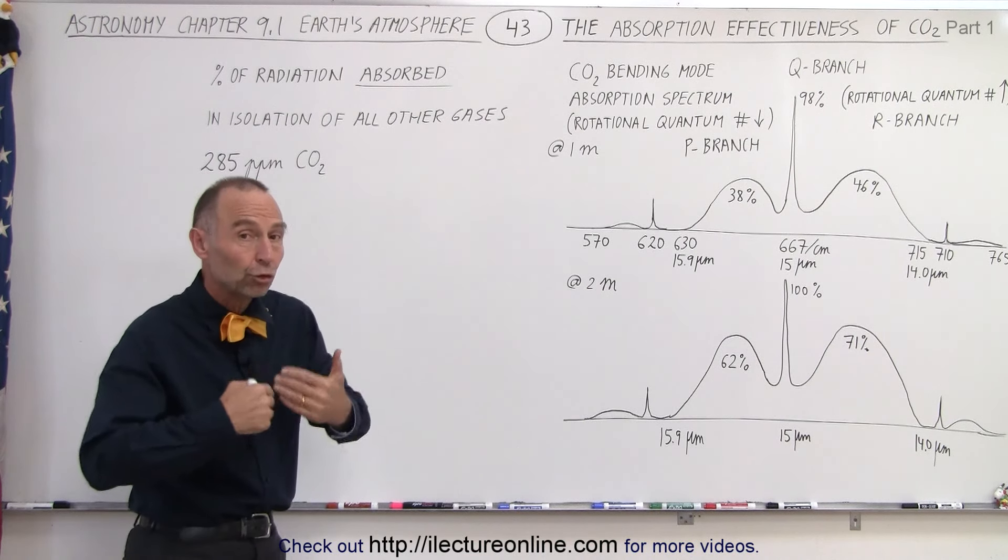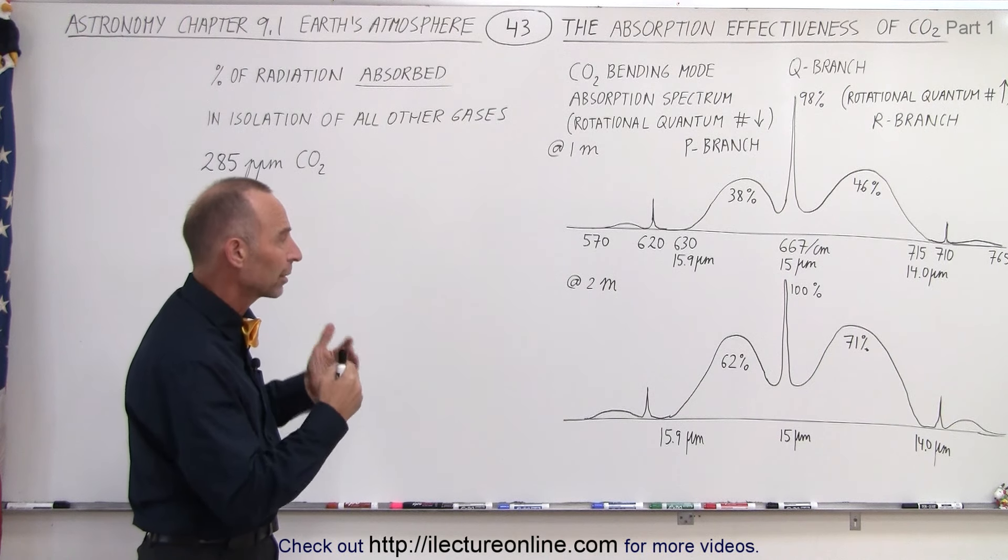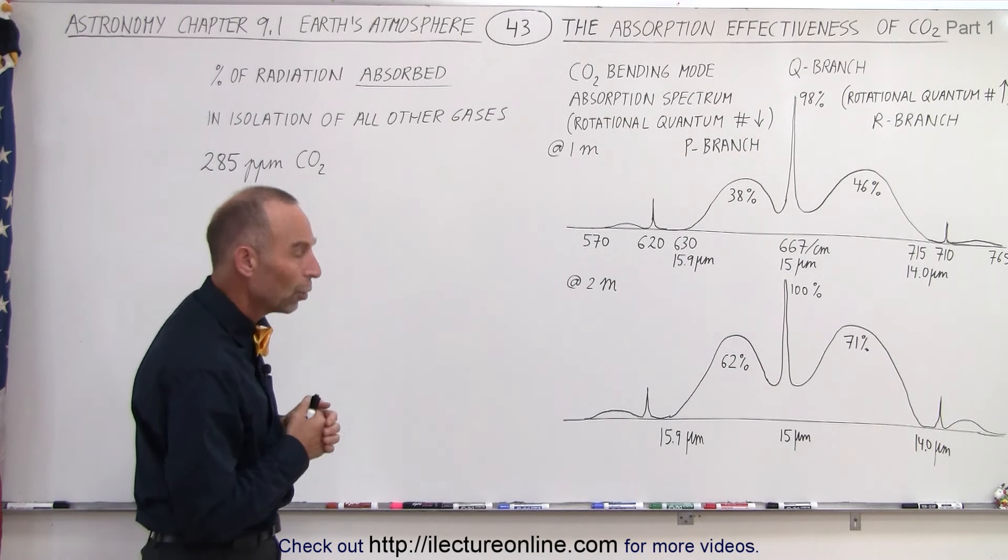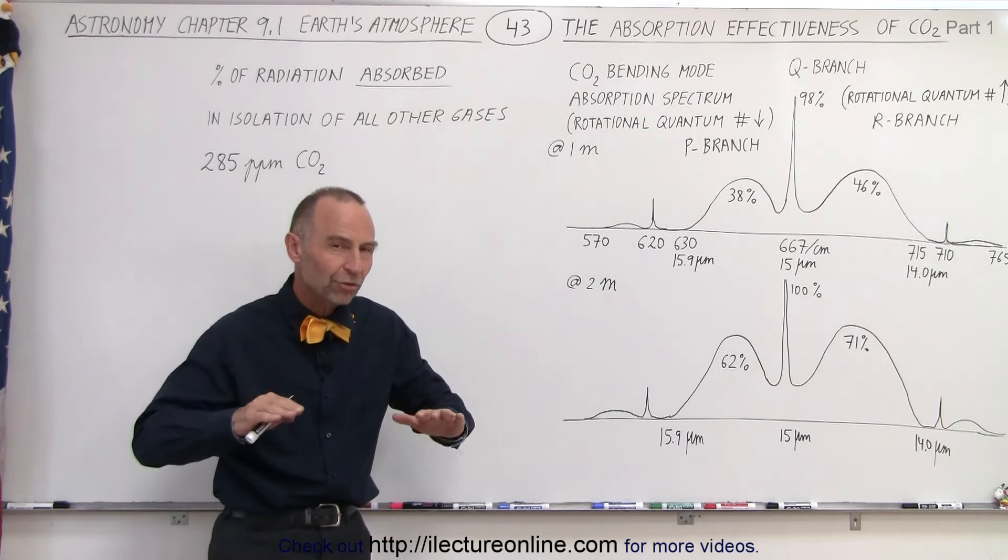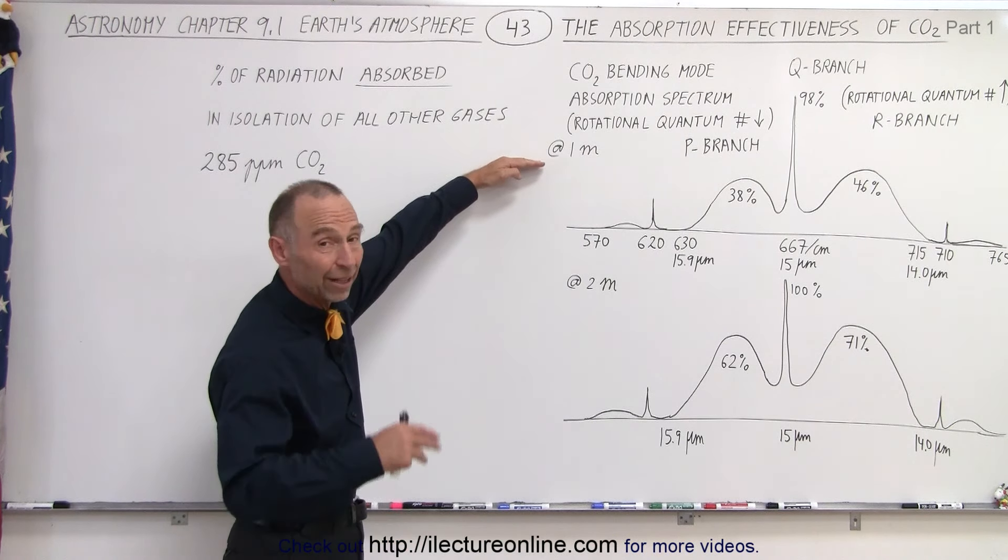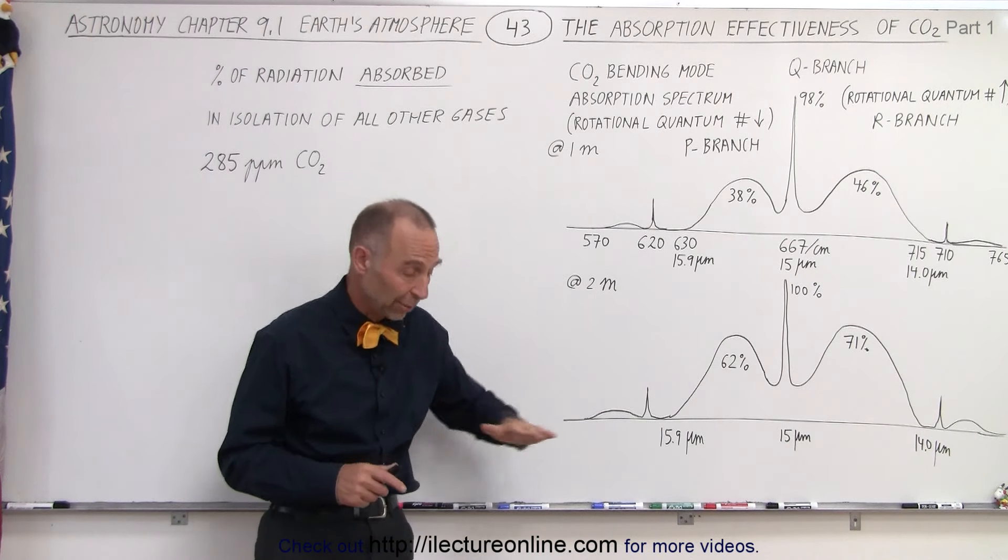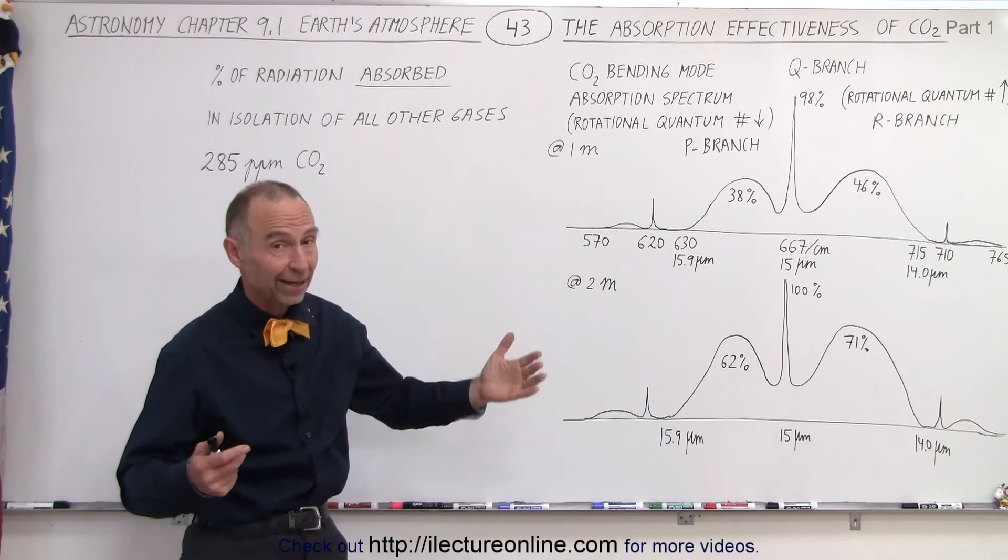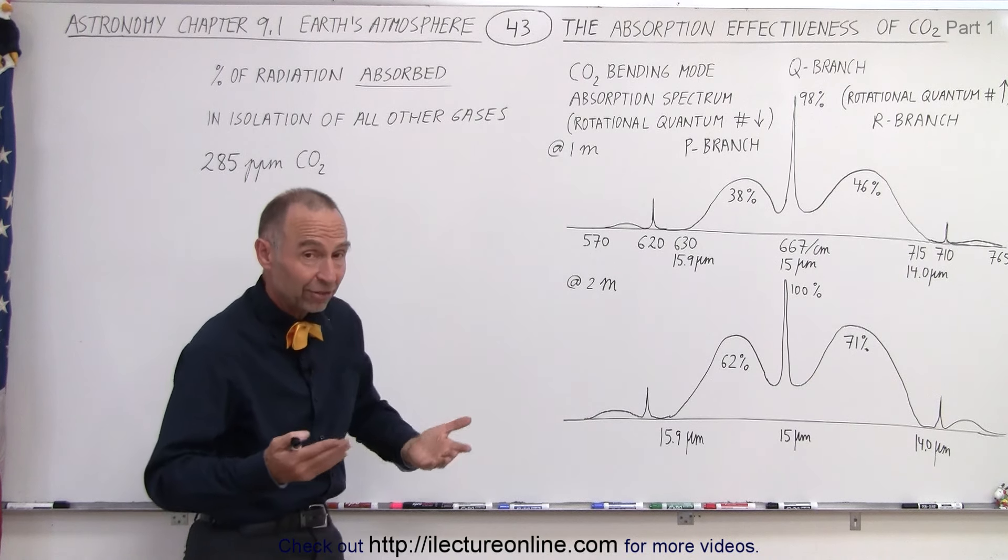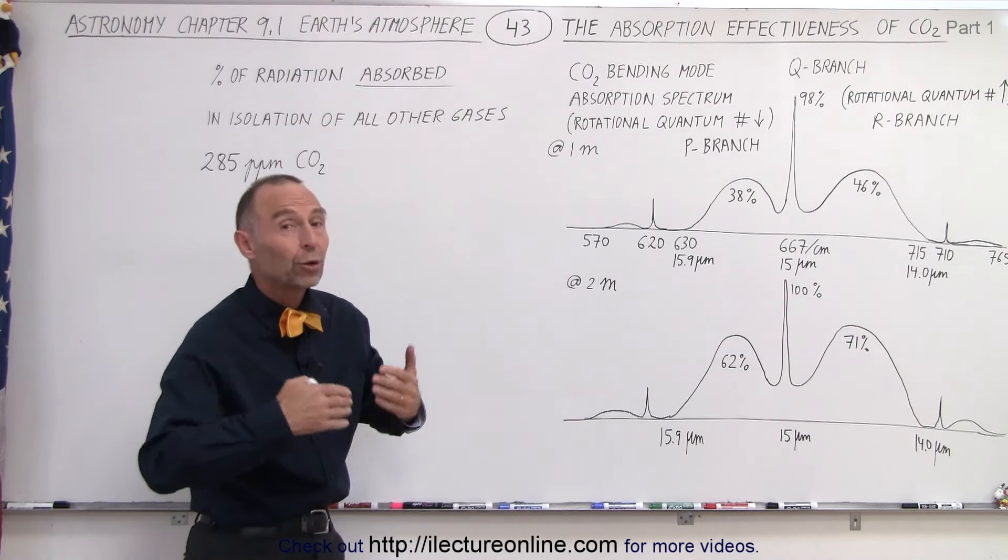And then later on we're going to show you what it looks like for the current, higher concentration of carbon dioxide. Also, we want to see how much of the energy is absorbed by carbon dioxide when it reaches an elevation of one meter, and then we do it again at two meters. Now, one meter, two meters, that's not very high, but that reflects how much radiation carbon dioxide can actually absorb very quickly as it leaves the surface of the Earth.